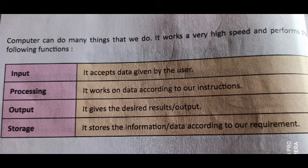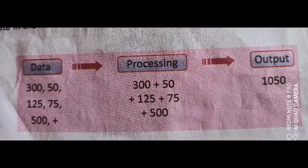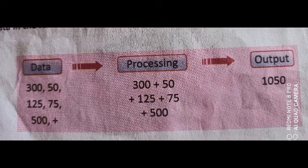We can store data into a computer or anywhere using storage devices according to our needs. Let's understand the input-process-output, meaning the IPO cycle, with the help of an example. Here, one number is given as data and the instruction is to add the data using the plus sign. We then process the numbers by adding them together. After processing, we get the result — answer 1050 — as output. The computer follows the instruction, adds the data as processing, and gives the result as the sum of all data.